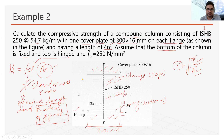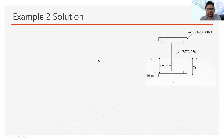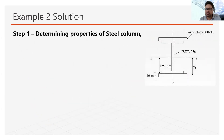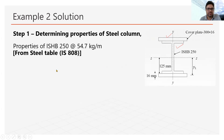Now we will start our solution. The first step is to determine the properties of the steel column. Since we have an I-section and a plate section, we will first find the properties of the I-section from the steel table. I will show how to find the properties of ISHB since we are using ISHB in this example, and we will look them up in the steel table.